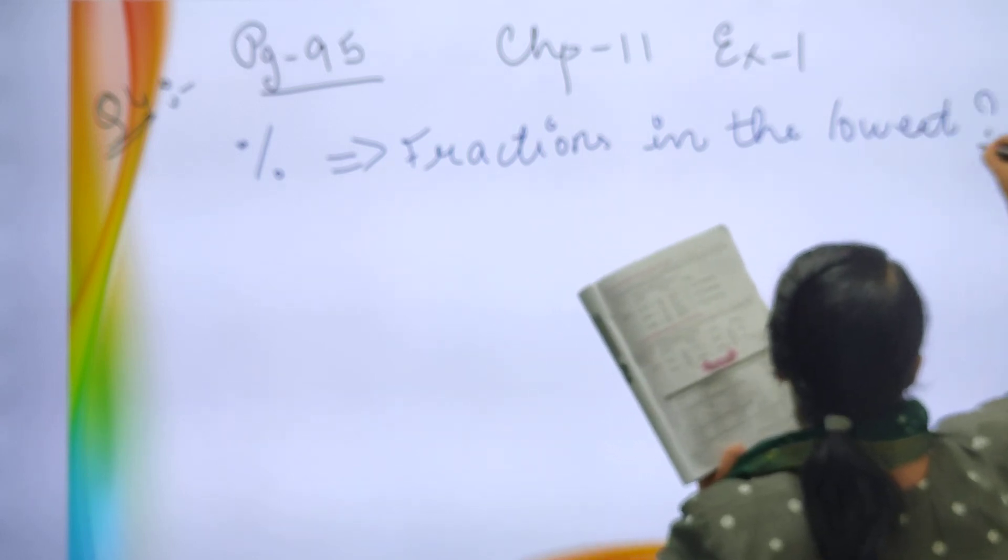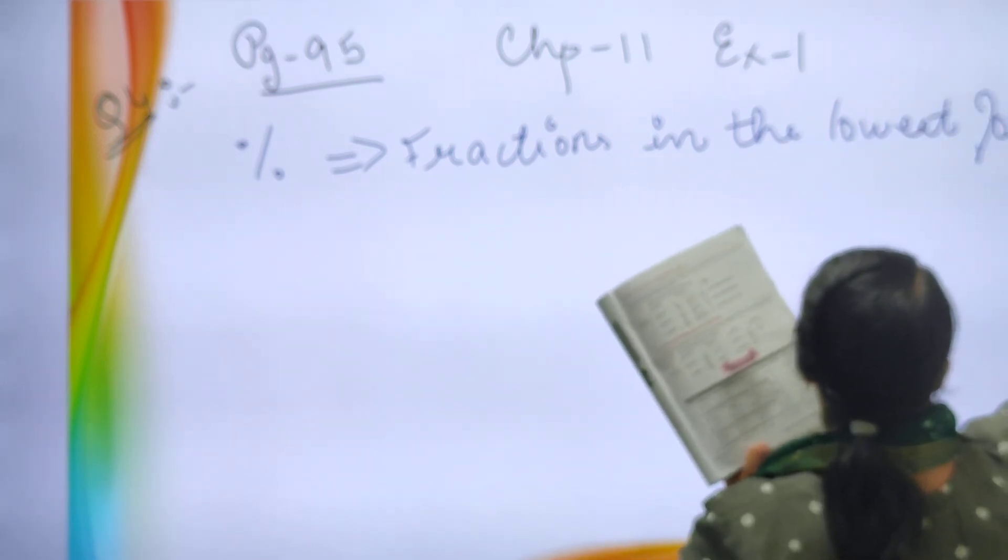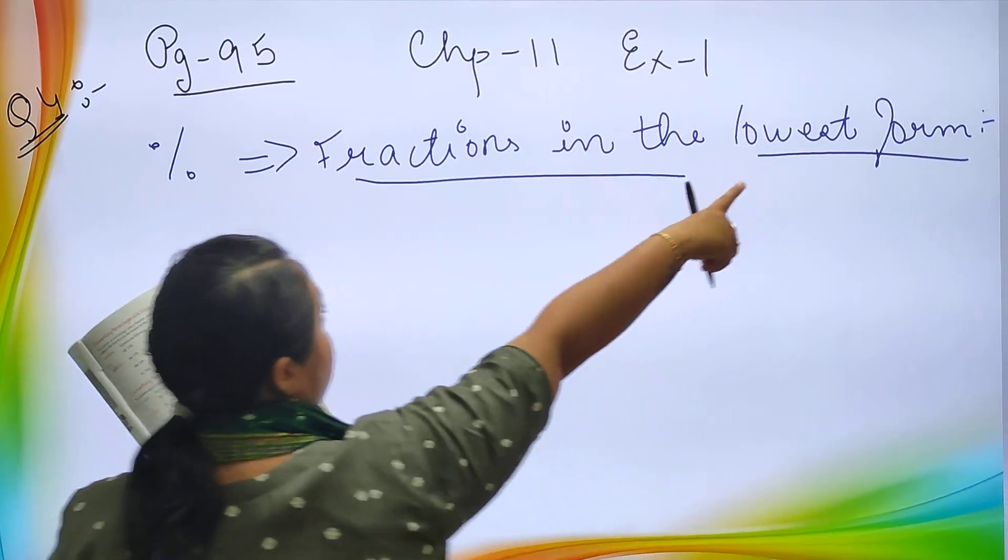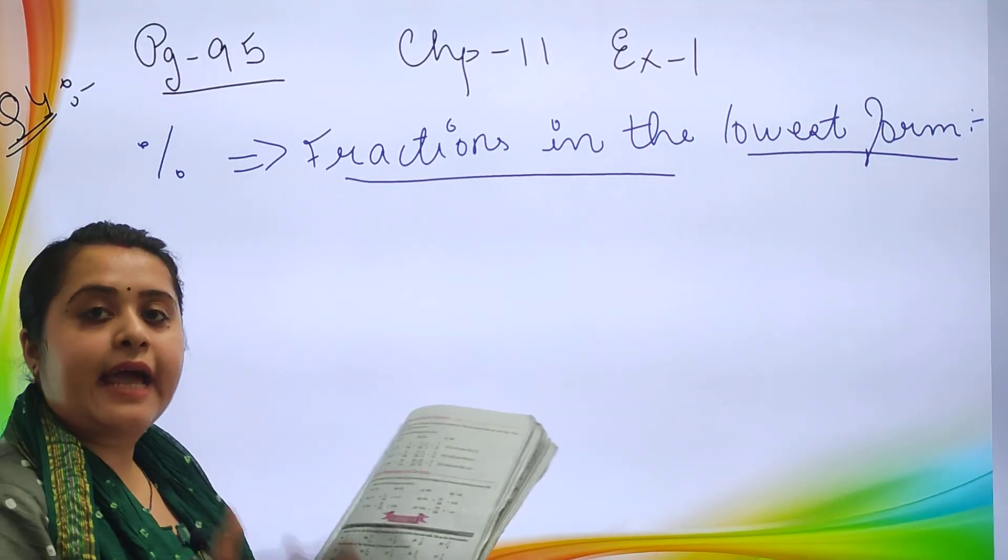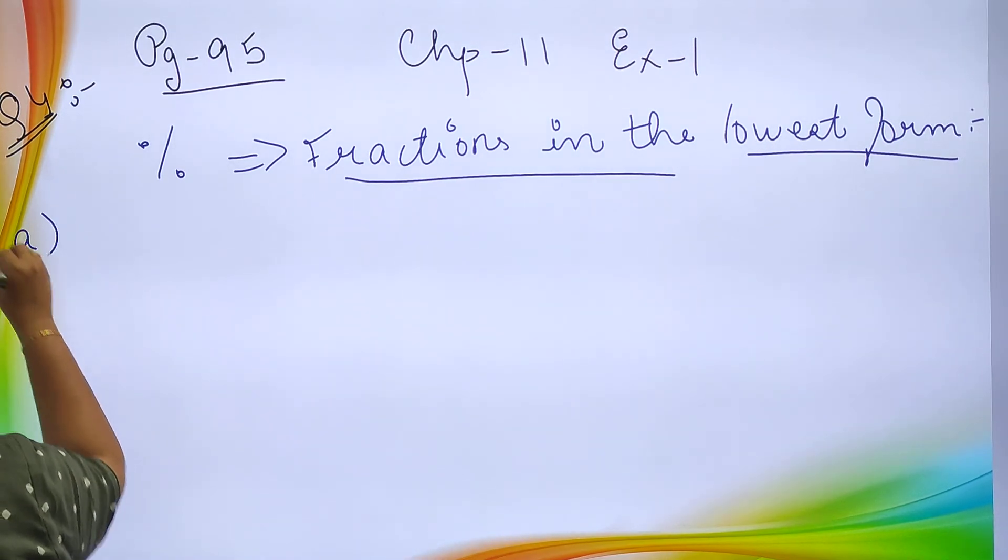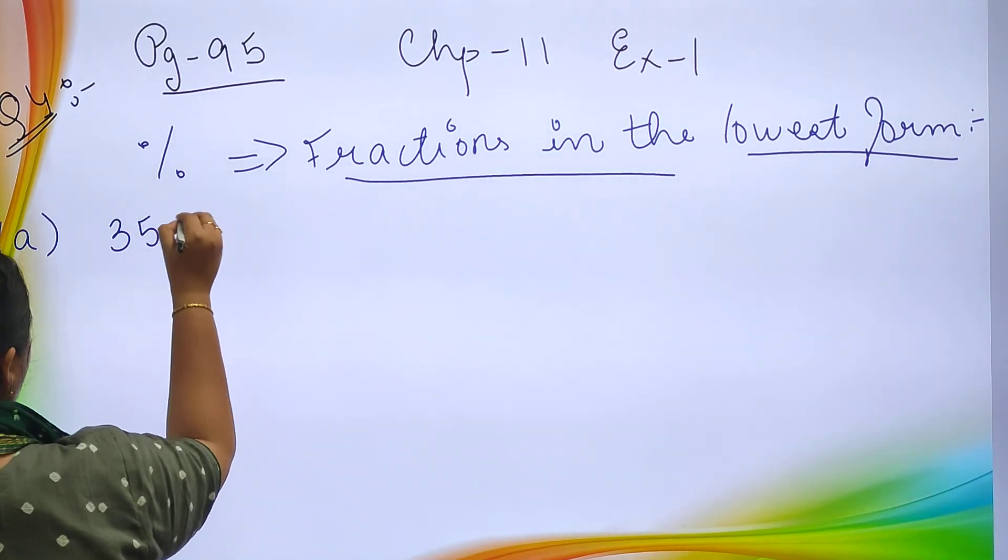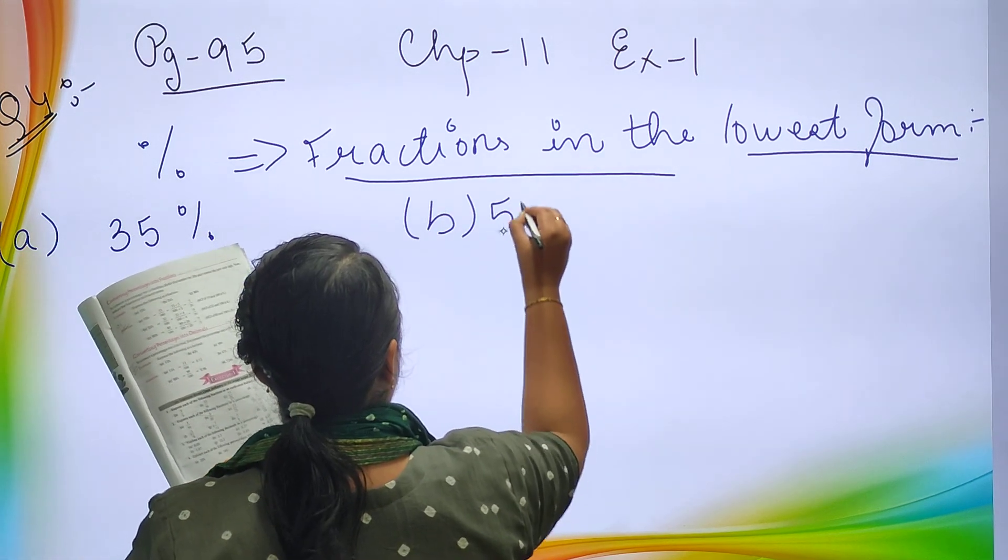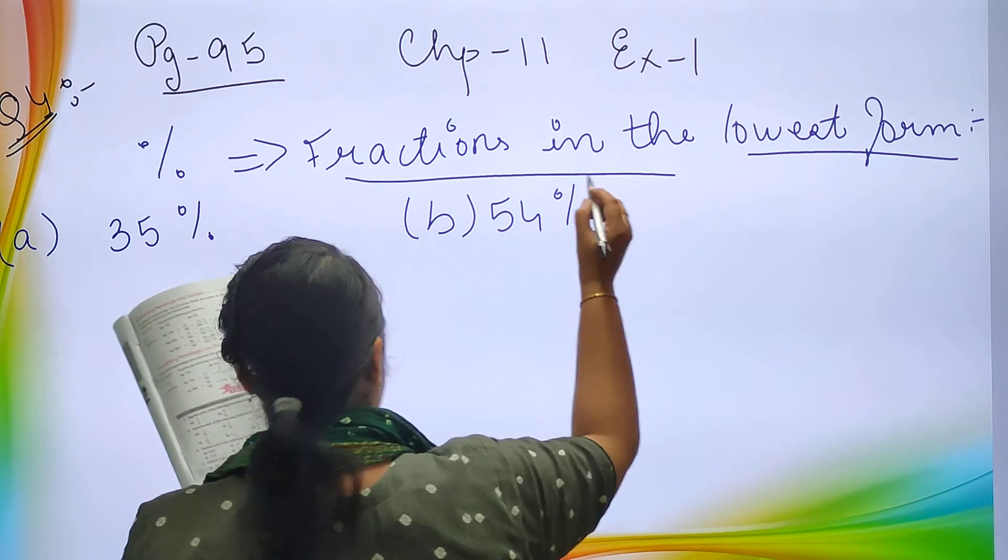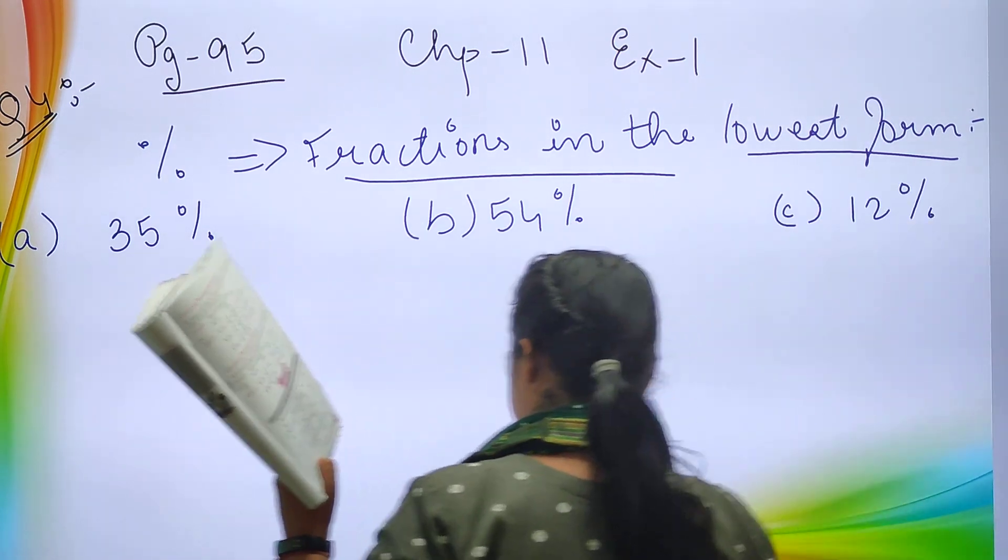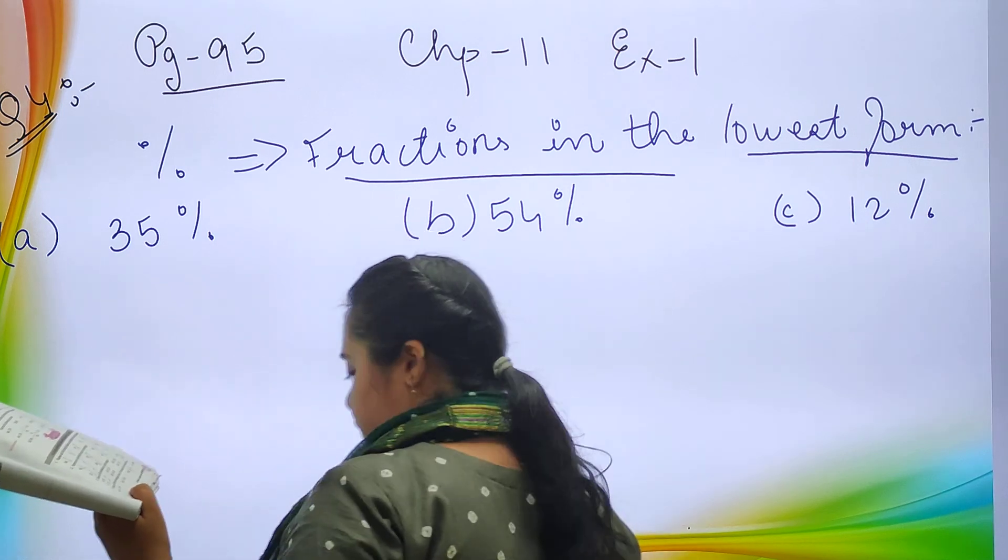When the question says lowest form, we will be doing the cutting part. Now part A: 35%, B: 54%, C: 12%. Now let's solve one by one.